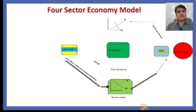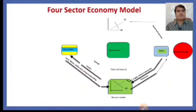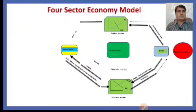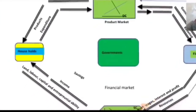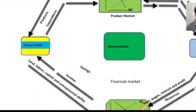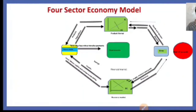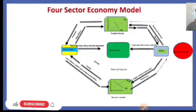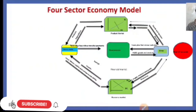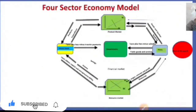The firm receives those resources and pays rent, wages, and interest, which becomes the income of the household. The firms provide goods into the product market where the household makes expenditure on the purchase of goods and services, which becomes income for the firms — this represents the two-sector economy. The government is then included: households pay taxes and fees and receive transfer payments, firms pay taxes and receive subsidies, and the government provides public goods and services to both firms and households.